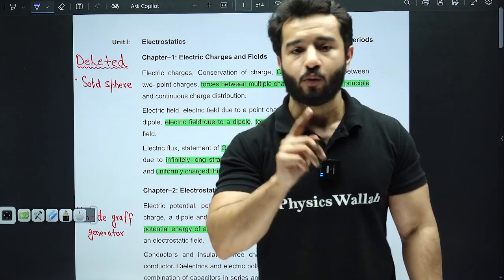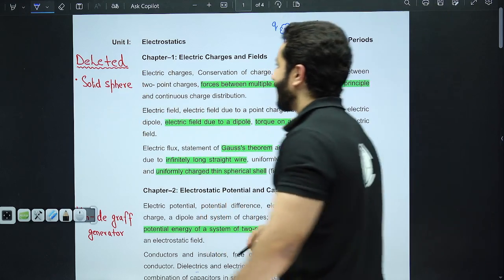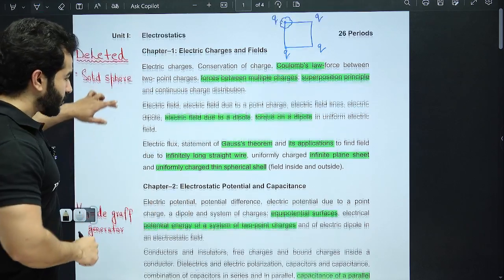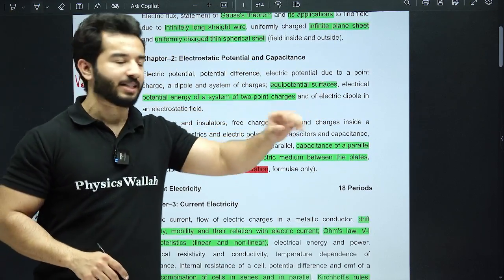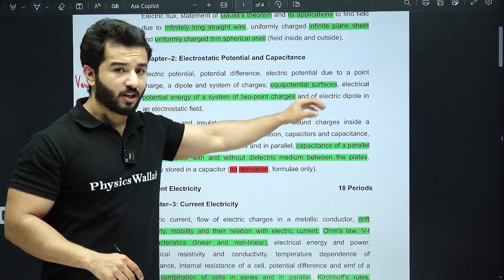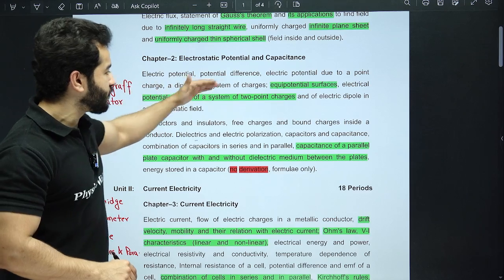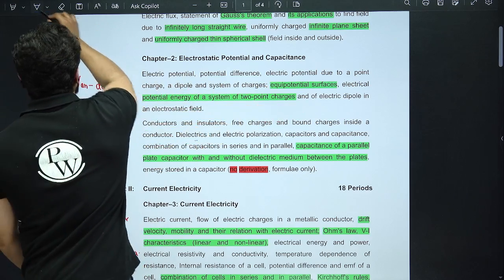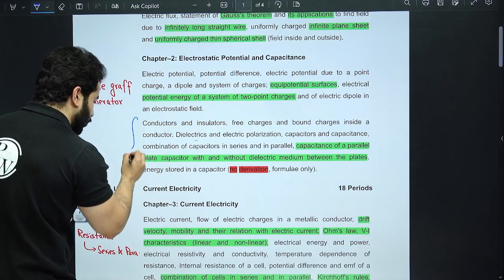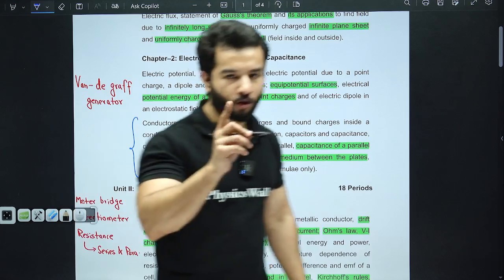What are the applications? Infinite long straight wire, infinite plane sheet, and uniformly charged thin spherical shell. Solid sphere is deleted, so you do not have to worry about it. Next, moving on, electrostatic potential and capacitance. From this, equipotential surfaces is important, potential energy of system of two point charges is important.